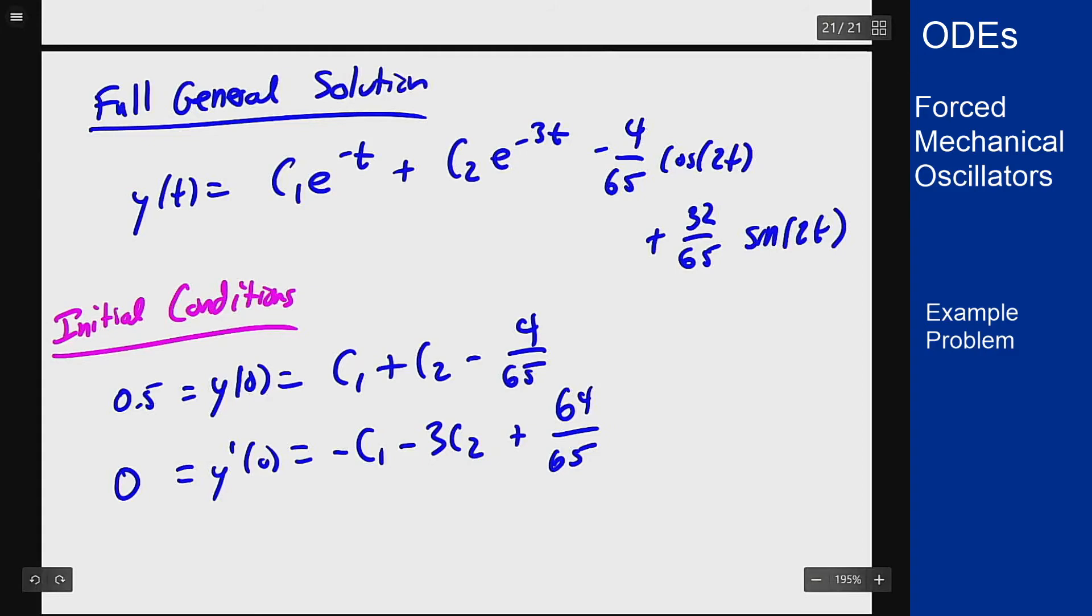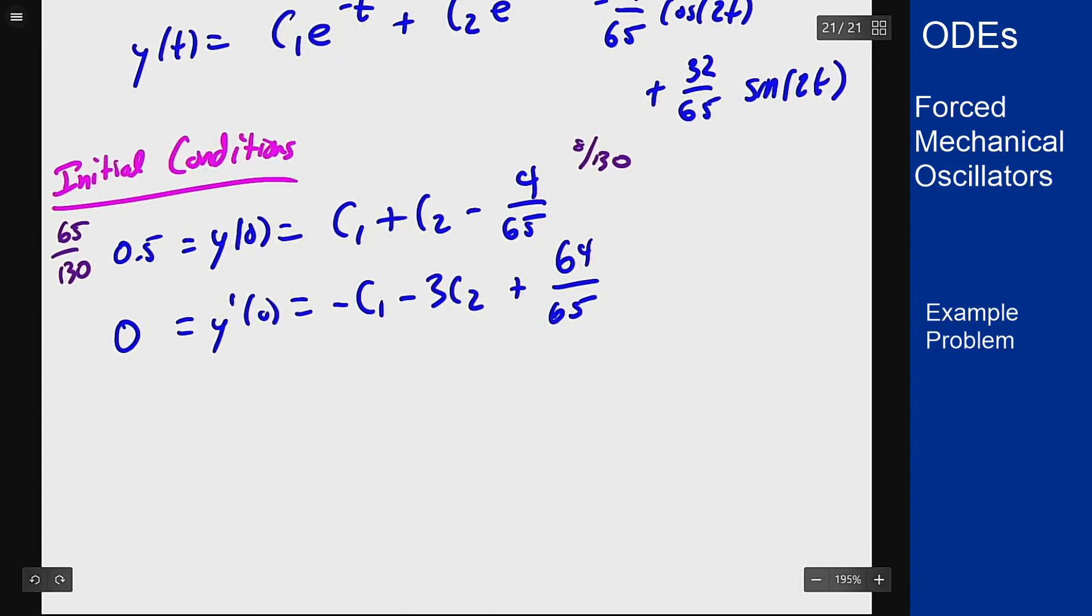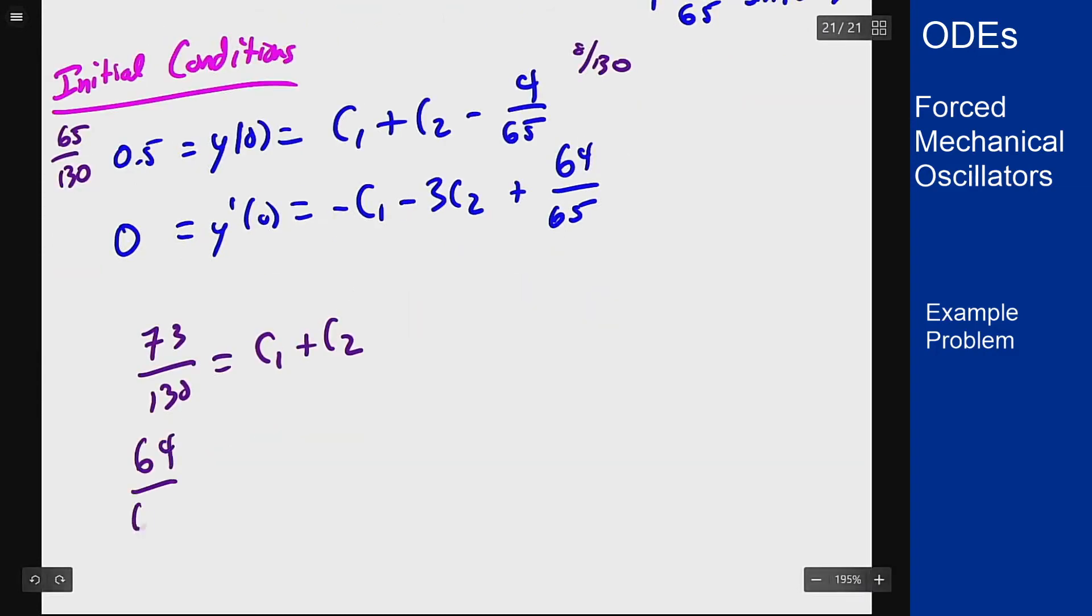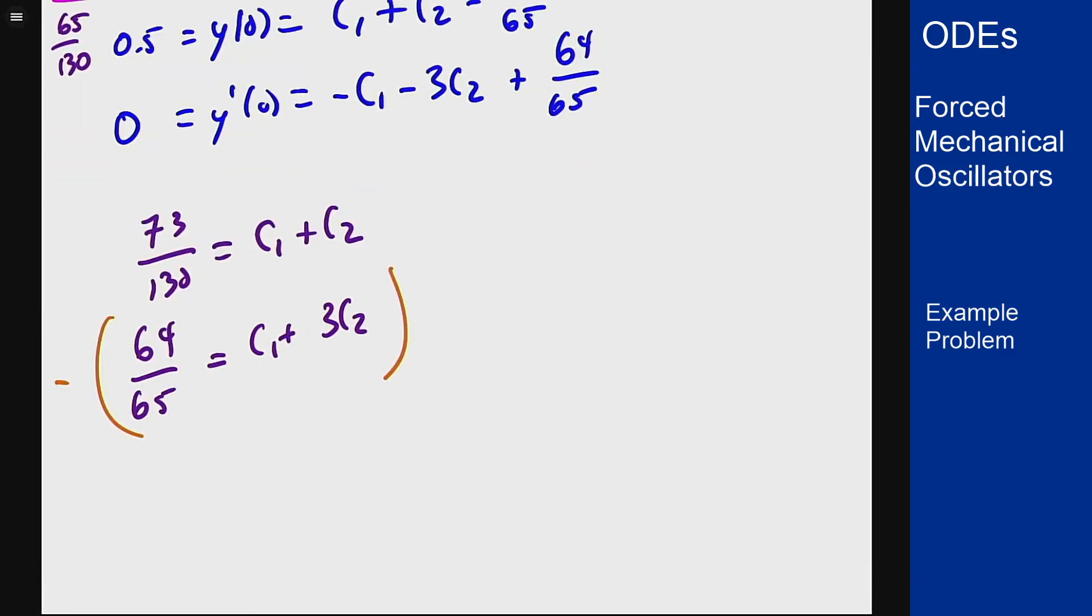Converting to common denominators, this half is 65 over 130 and this is 8 over 130. So rearranging the equations I get that 73 over 130 is c1 plus c2 and 64 out of 65 is c1 plus 3c2. Now I want to subtract these two equations, which gives me 73 minus 128 over 130 equals negative 2c2. The difference there is negative 55 over 130.